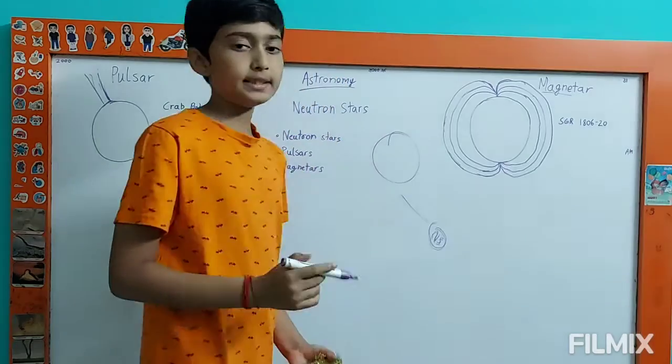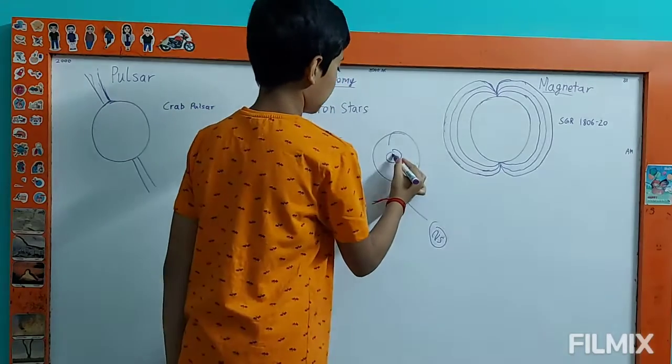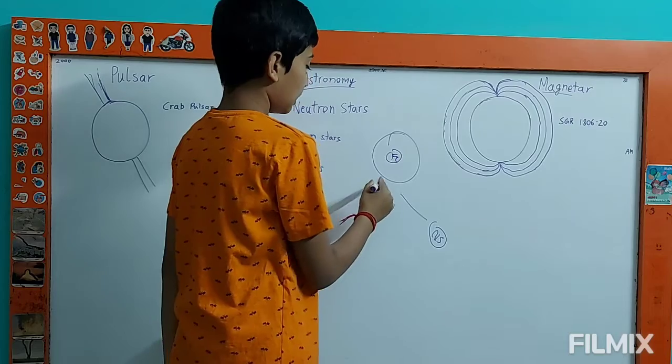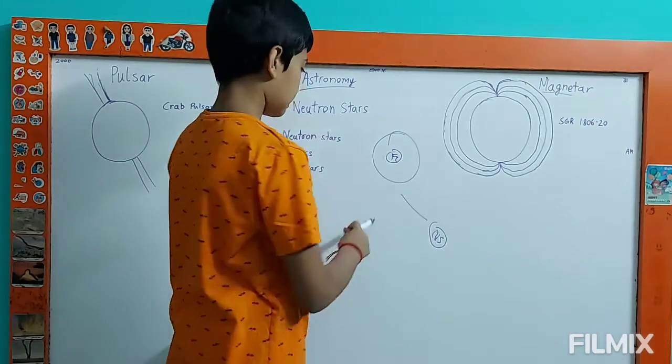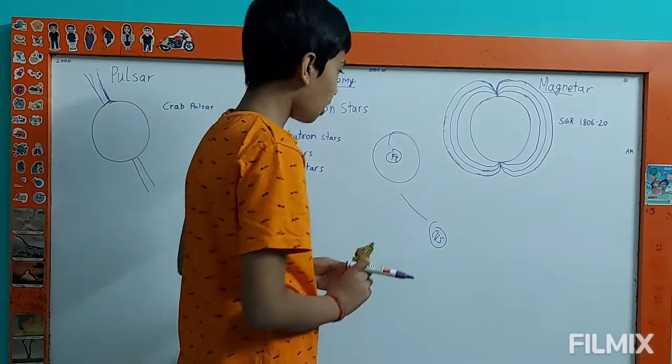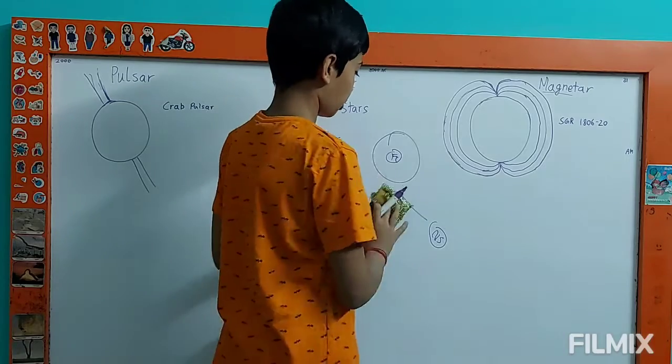Meanwhile, if the density is because of the iron core, it can't fuse anymore. If it is very dense, it becomes a black hole. But if it is not as dense, it becomes a neutron star.